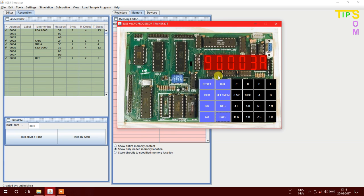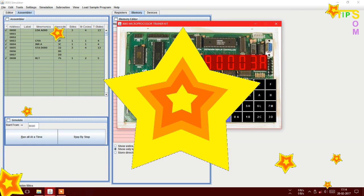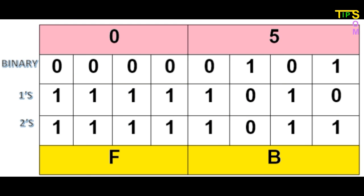Now I'll show you how the two's complement works inside the microprocessor. I'm finding the two's complement of 05 hexadecimal. First, the microprocessor converts 05 to binary: 05 hex is 0000 0101 in 8 bits. Next, it performs the one's complement using CMA: 1111 of 0000 gives 1111 1111 from the upper nibble, and 1010 as the one's complement of 0101.